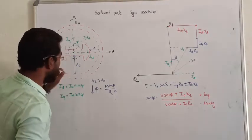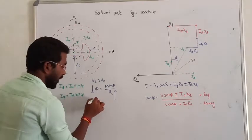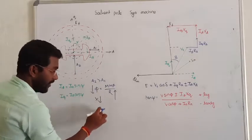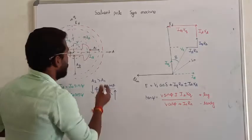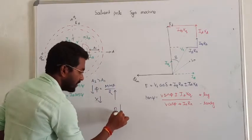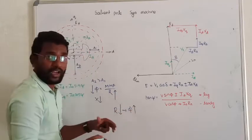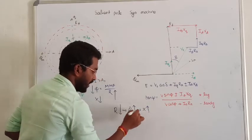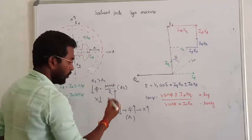So in air gap A2, we have very less flux. If flux is lower, then the reactance drop will also decrease — that is in case of area A2. Whereas in area A1, the air gap is very less. If air gap is lower, reluctance will decrease, flux will increase, and then the reactance drop will increase. That is the case for area A1.